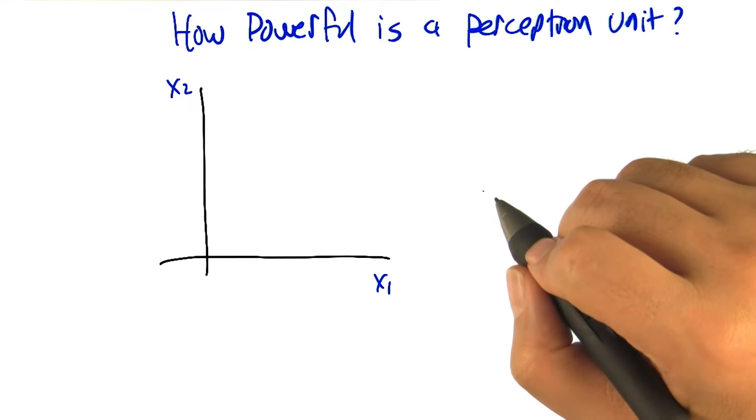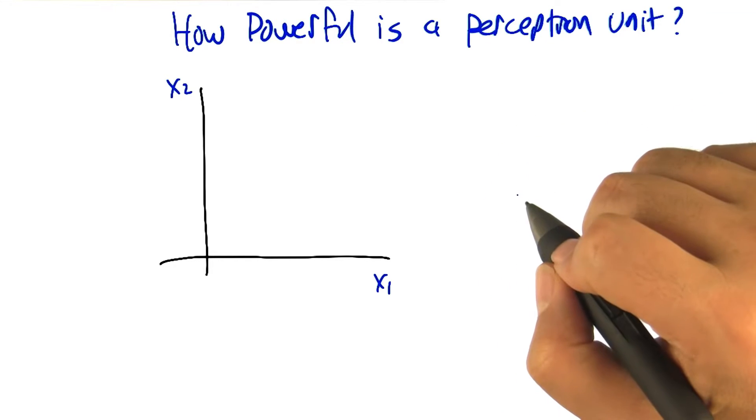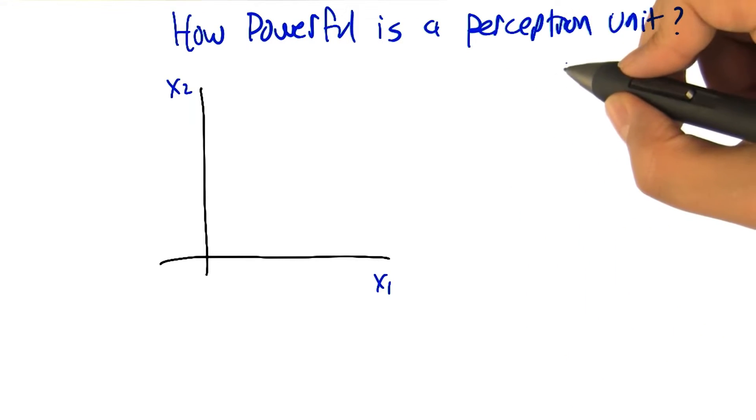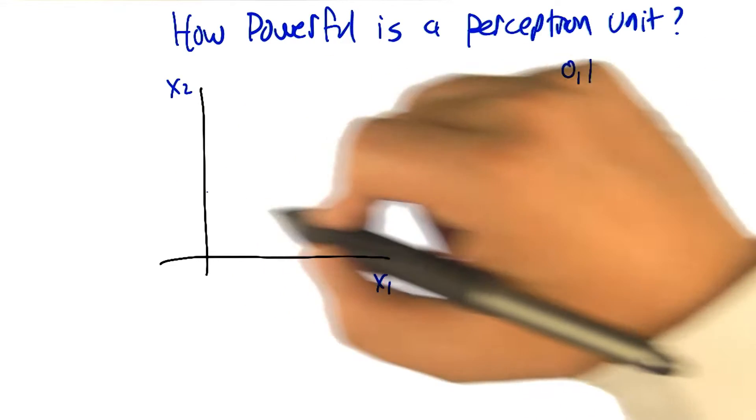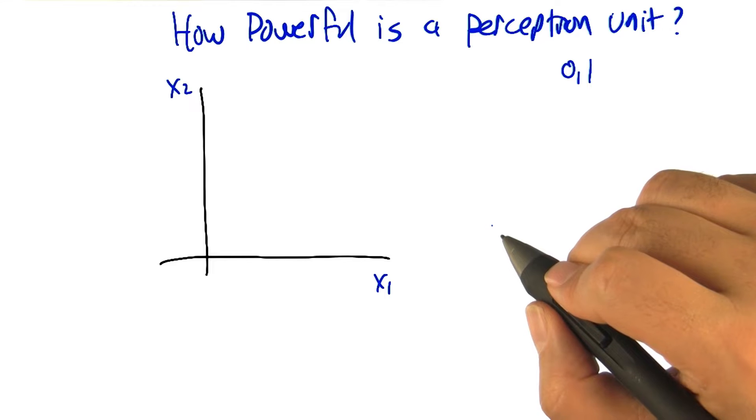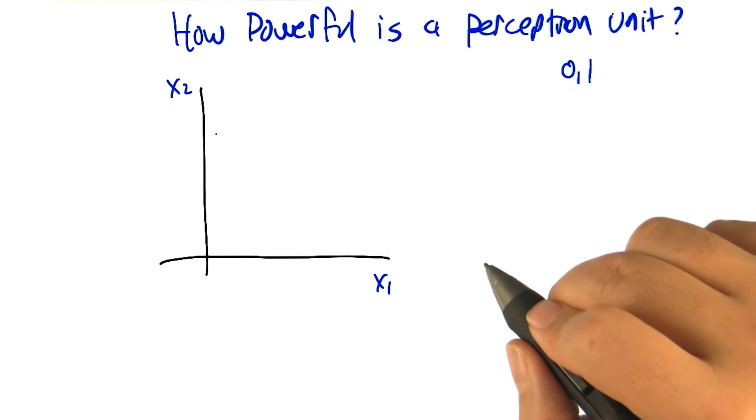We'd like to get an understanding of how powerful perceptron units are. What is it that they actually do? They return in this case either 0 or 1 as a function of a bunch of inputs. For simplicity of visualization, let's imagine that we've got two inputs, x1 and x2.